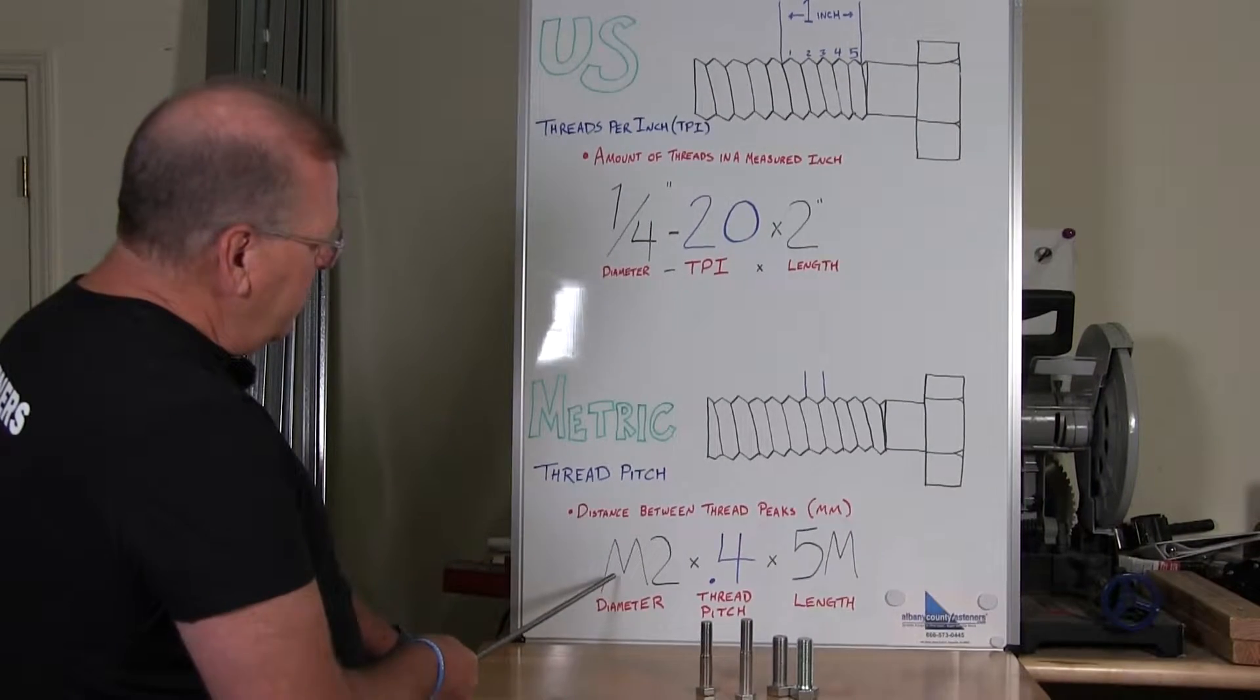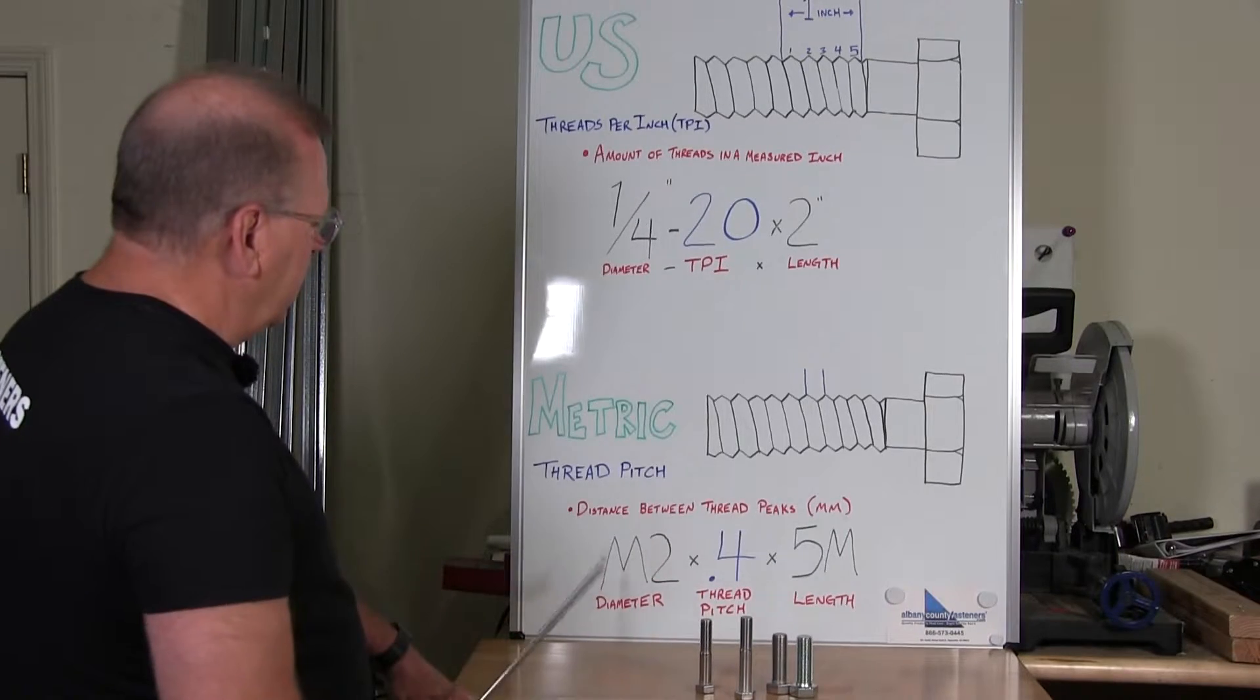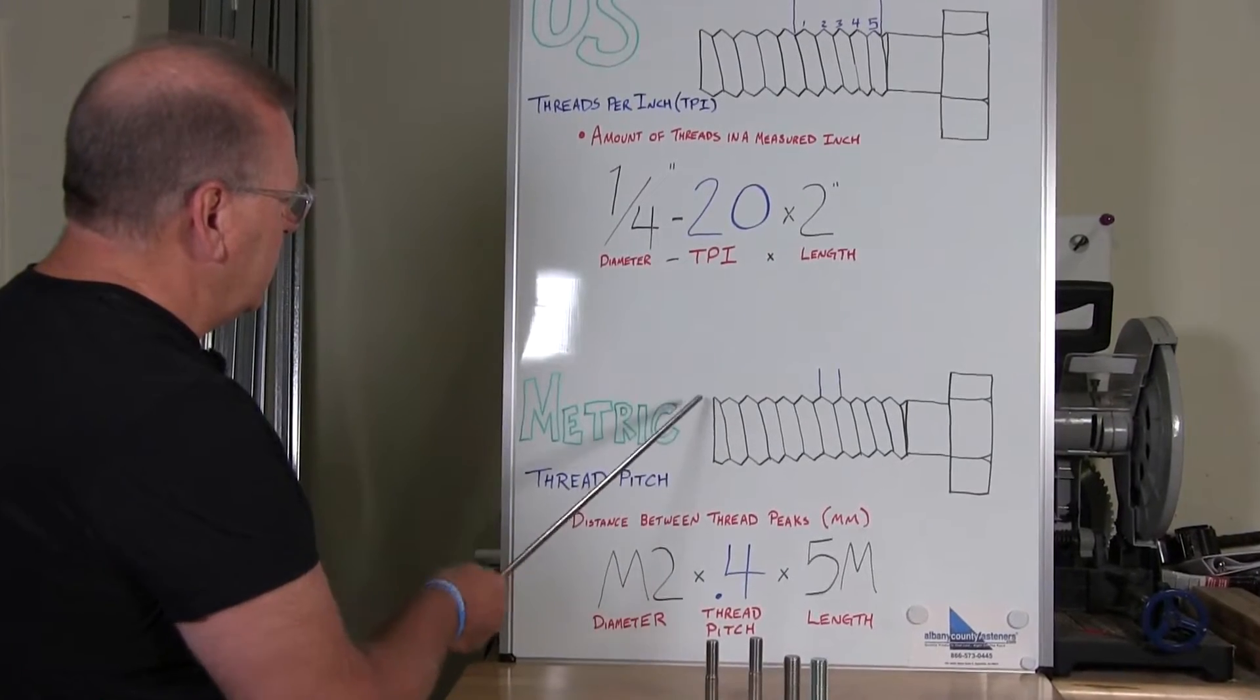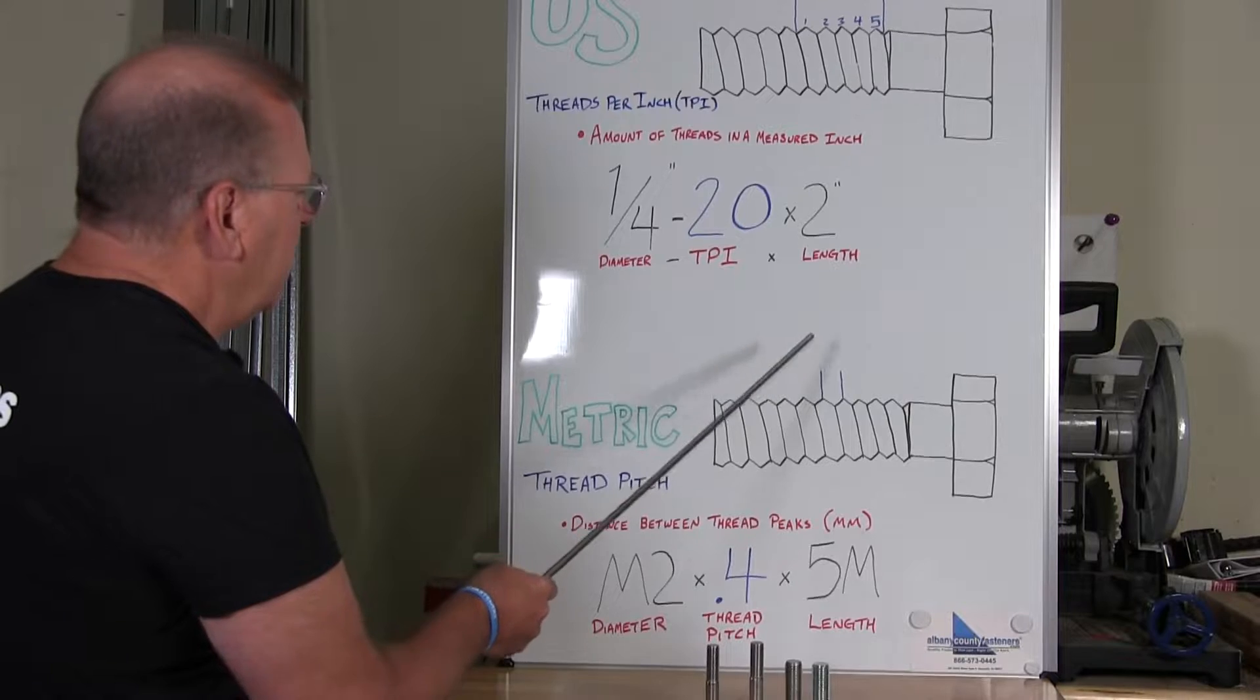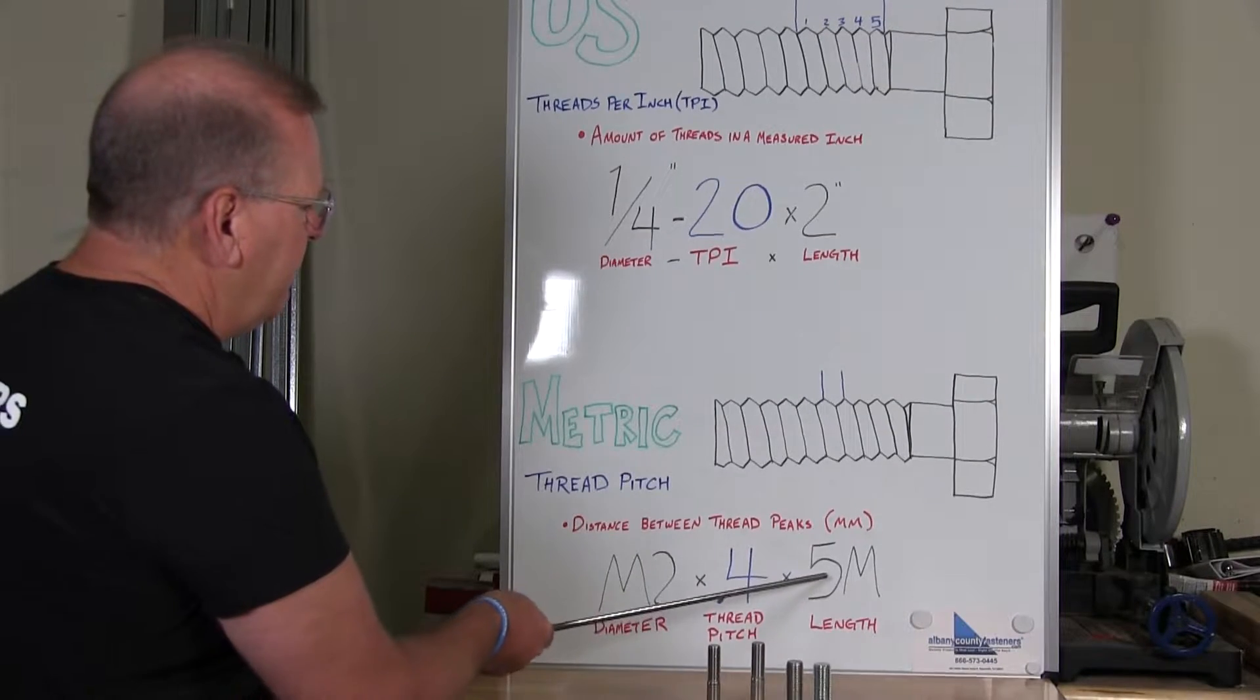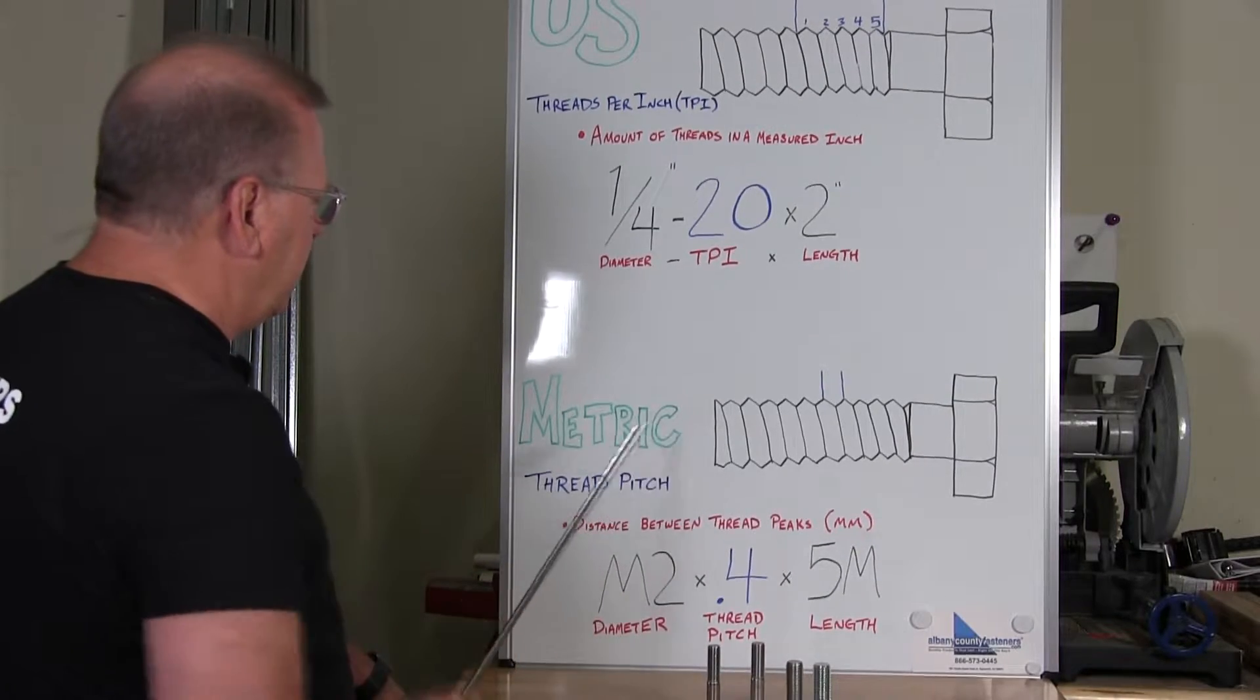And then you see here M2 by 0.4 by 5 millimeter. So the 2 is the diameter, which is from this point to this point. The 0.4 is the thread pitch from the high point to the high point. And then the 5M is the length from under the head to the end of the bolt.